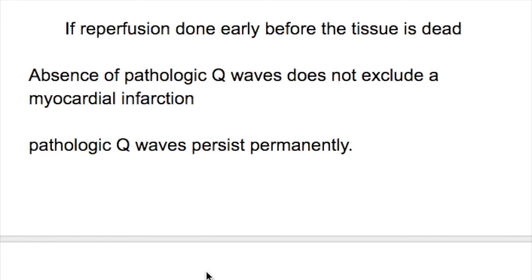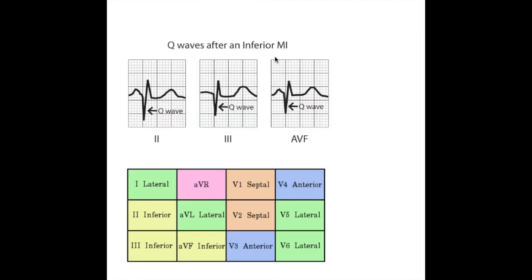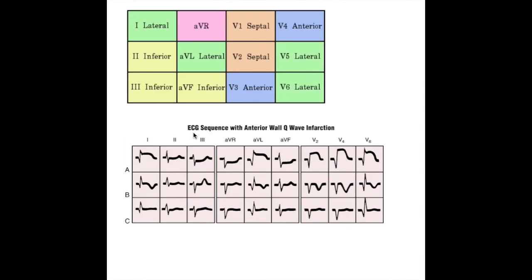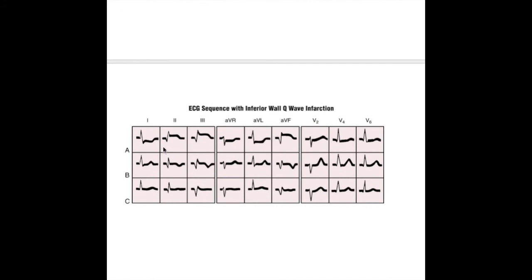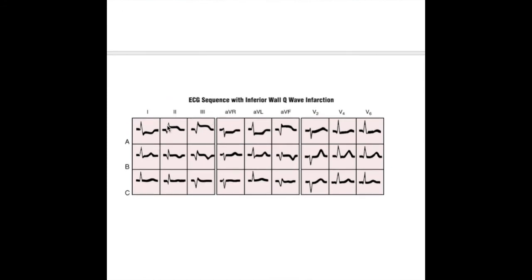After inferior MI, Q waves develop in leads II, III, and aVF — these are contiguous leads. In anterior wall MI, Q waves are present in leads I, aVL, V5, and V6. Over time, the Q wave persists permanently while the ST segment returns to normal. In inferior wall MI, leads II, III, and aVF initially show Q waves with ST elevation, which then resolves leaving the persistent Q wave.